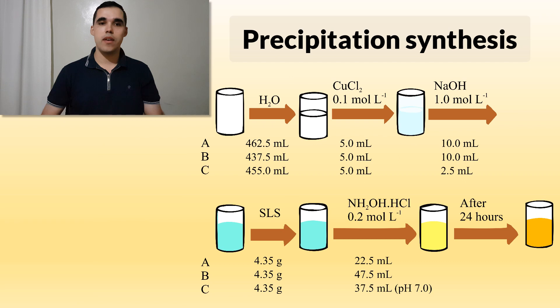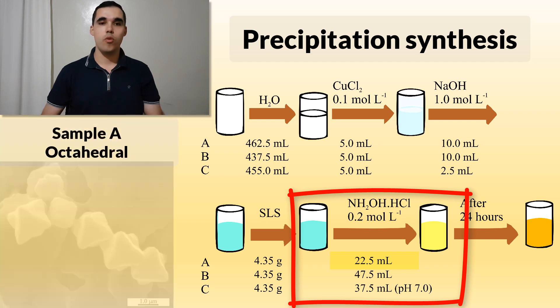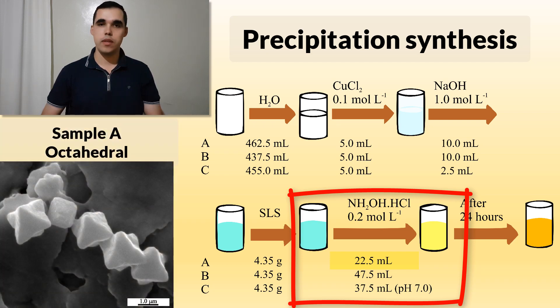Three different morphologies were observed. For a small amount of hydroxylamine chloride, the predominant morphology observed was octahedral, sample A.